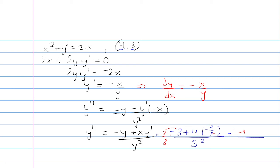So we'll just have 4 times negative 4 is negative 16. And then 3 times 3 squared, that's going to be 3 cubed, which is 27. So this is negative 25 over 27, and that's the second derivative of y with respect to x.